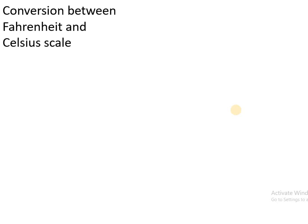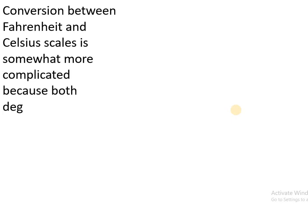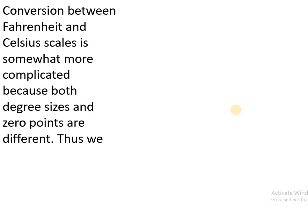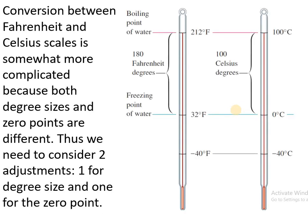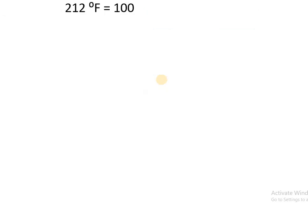Conversion between Fahrenheit and Celsius scale is somewhat more complicated because both degree size and zero points are different. Thus we need to consider two adjustments: one for degree size and one for the zero point. As already discussed, 0 degree Celsius represents 32 degree Fahrenheit and 100 degree Celsius represents 212 degree Fahrenheit.